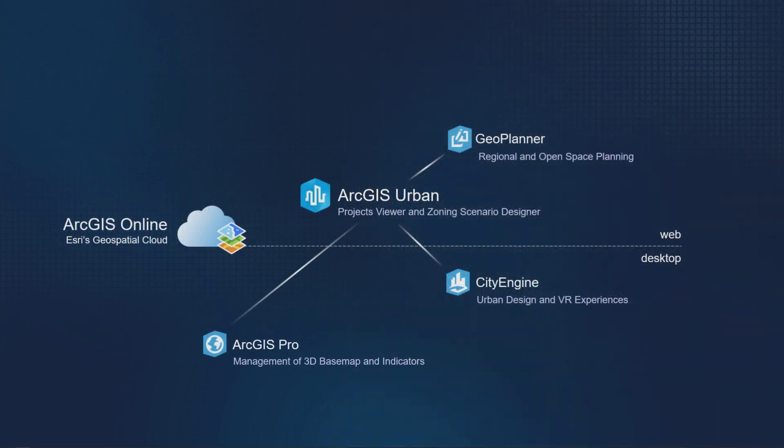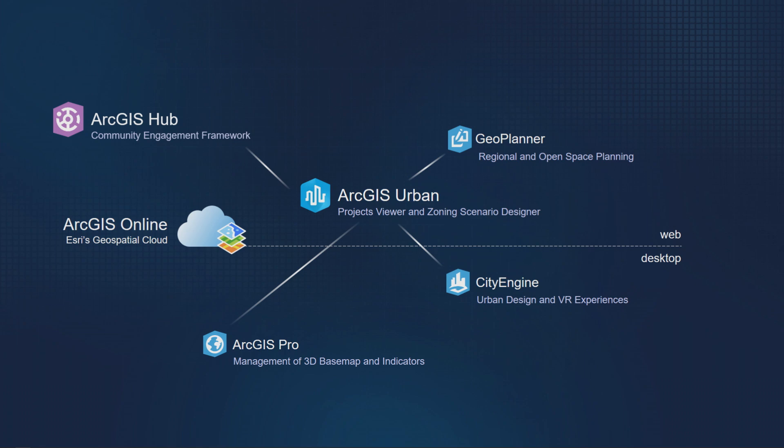ArcGIS Urban, as you'll see from Lisa, is a tool that ties in a lot of different components of our platform, including GeoPlanner, from the regional scale down to the city scale, and further into urban design use within CityEngine. And urban is also the means from which we can start discussions around plans and projects with other tools like ArcGIS Hub. You'll probably learn a lot about all of these throughout the week, but rather than going through any more slides, I'm going to hand it over to Lisa to give you a quick demonstration of ArcGIS Urban.